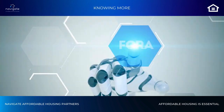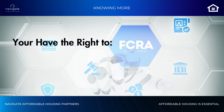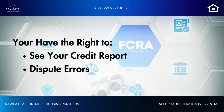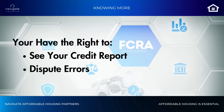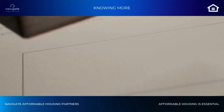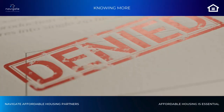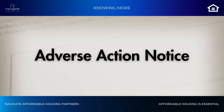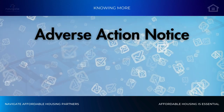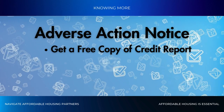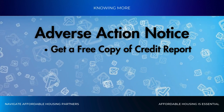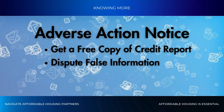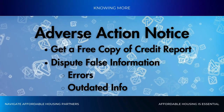Remember, under the Fair Credit Reporting Act, you have rights, such as requesting a copy of your report and disputing any errors. Sometimes landlords may decide not to rent based on your background check. If that happens, you're entitled to an adverse action notice, which informs you of your right to get a free copy of the report and dispute false information. This is especially important if the report has errors or outdated info.